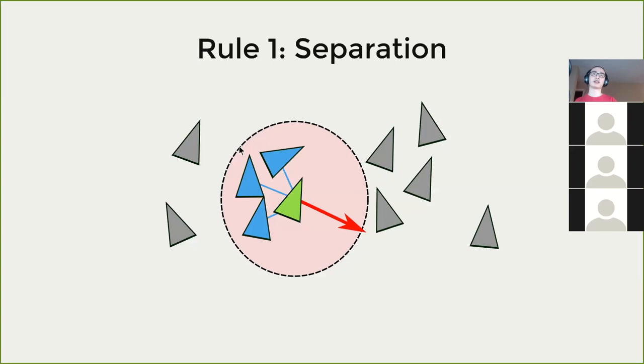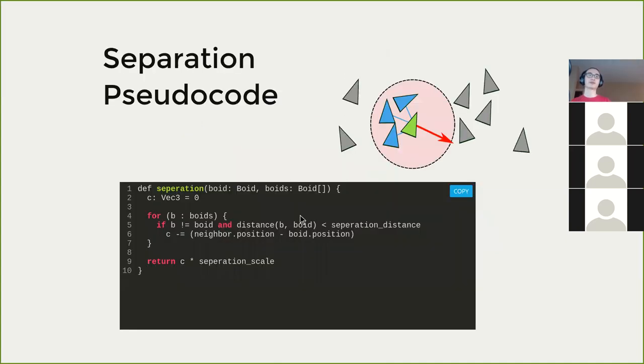We run this process on all of the boids. It's a double for loop. We run the process on all the boids, and for each boid, we run it on all the neighbors. The code is like this: separation rule for each boid, we loop through all the other boids. If they are not themselves and they are close to our little boid, then we repel them away from the neighbor boids a little bit.